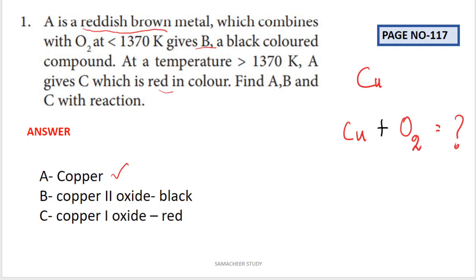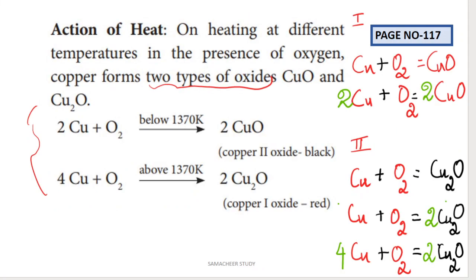I already told you that Cu plus O2, less than 1370, gives CuO. Let's memorize it. Cu plus O2 equals CuO. There are two oxygens. Two oxygens are balanced in this equation. You are already learning balancing. First, two is balanced. Now oxygen is balanced. Here is two and here is two. Here is copper. There are two copper. So 2Cu is balanced in this equation. The balance is complete. So 2Cu plus O2 below 1370 Kelvin gives 2CuO, copper 2 oxide, black color.